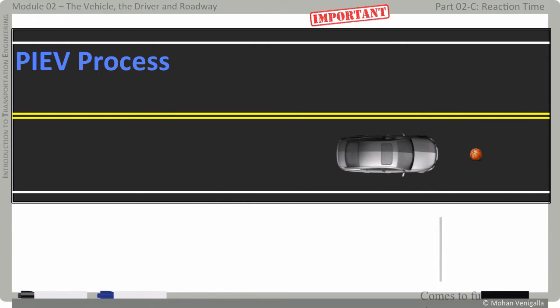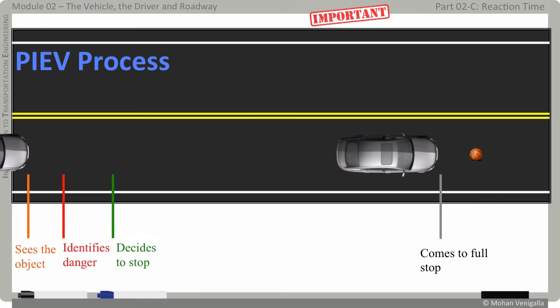Bob came to full stop here. And he was here when he first saw the ball in his peripheral vision. Somewhere here, he identified the danger. Somewhere here, marked by this green line, he decided to apply brakes. And this is where he actually applied the brakes. That means he took action. This is the only tangible location we can clearly identify in this process. If there are any skid marks, they should begin at this gray line. And now to some definitions.